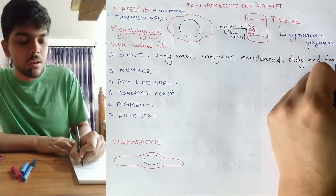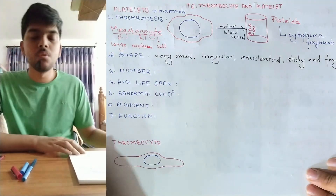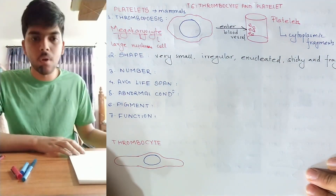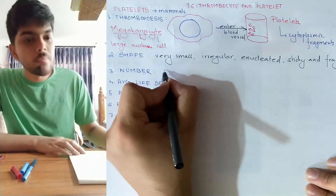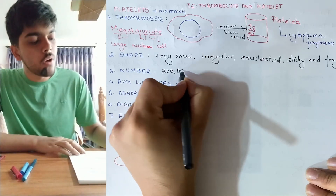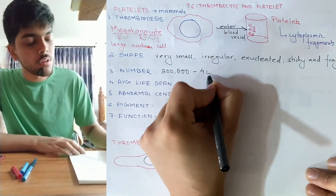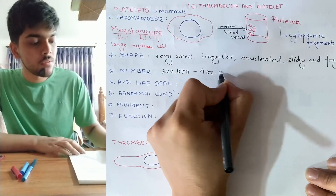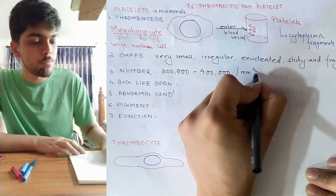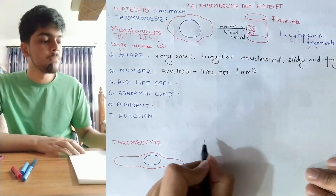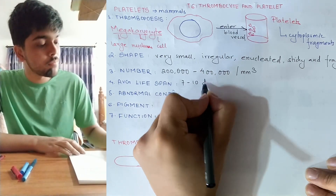The normal count of platelets varies from 200,000 to 400,000 per cubic millimeter of blood. The average lifespan of platelets is from seven to ten days.